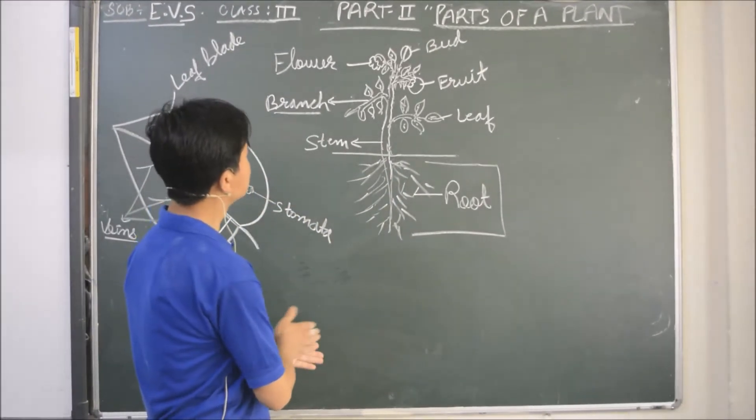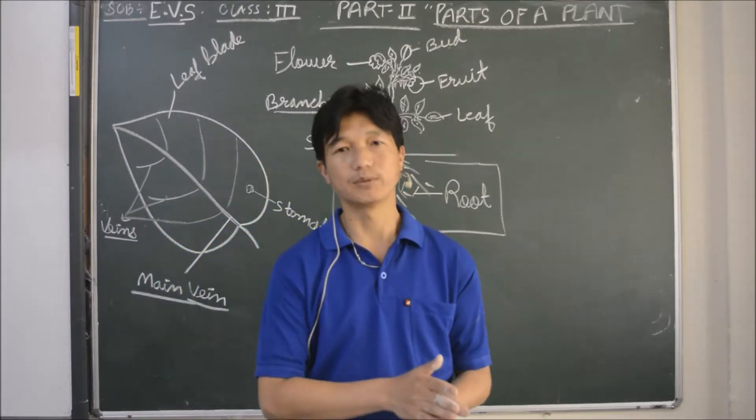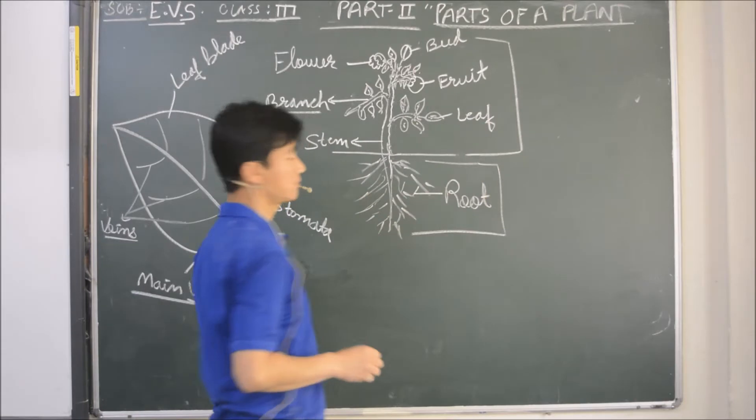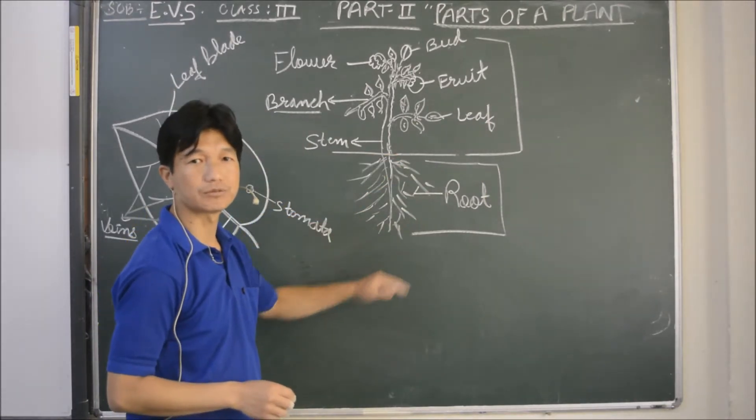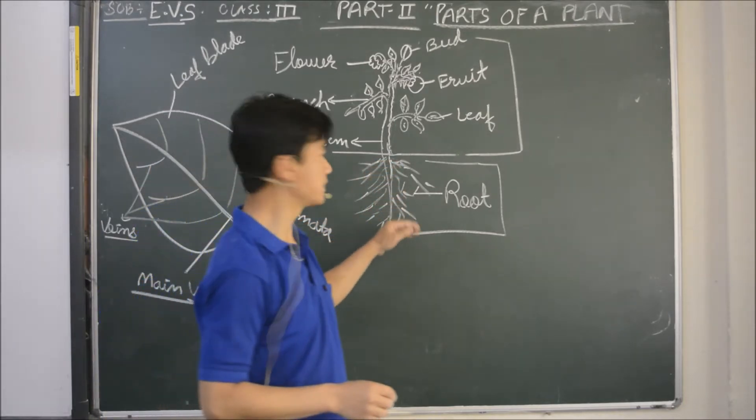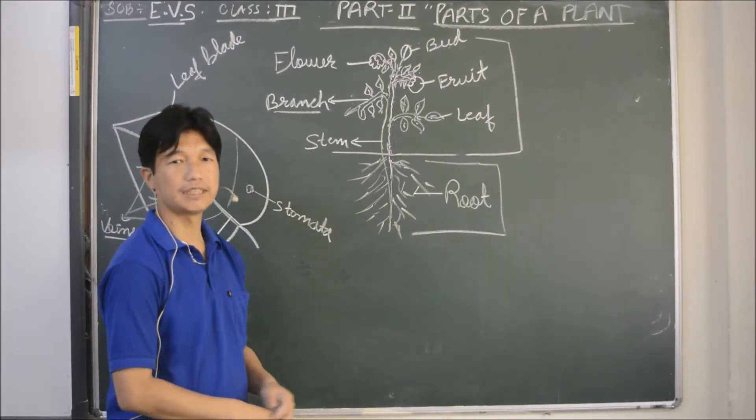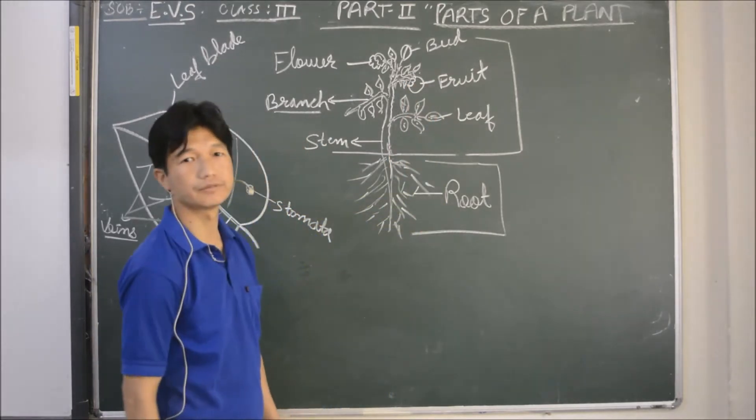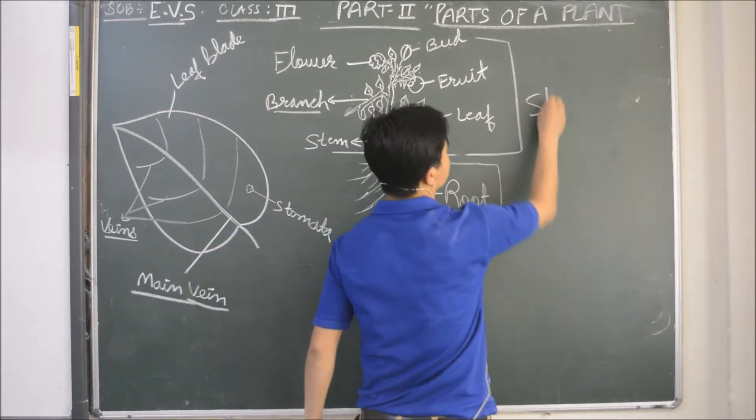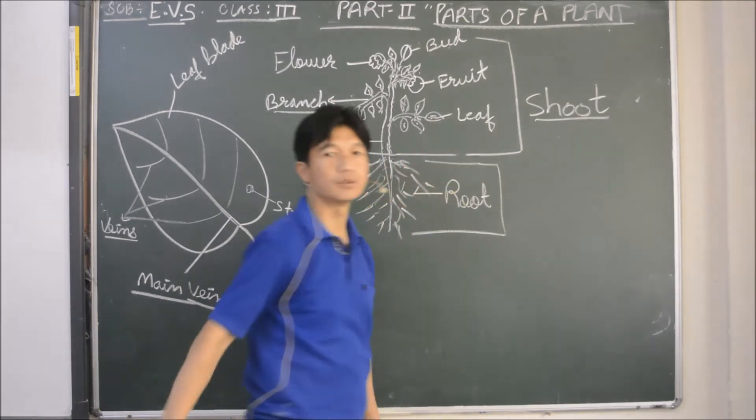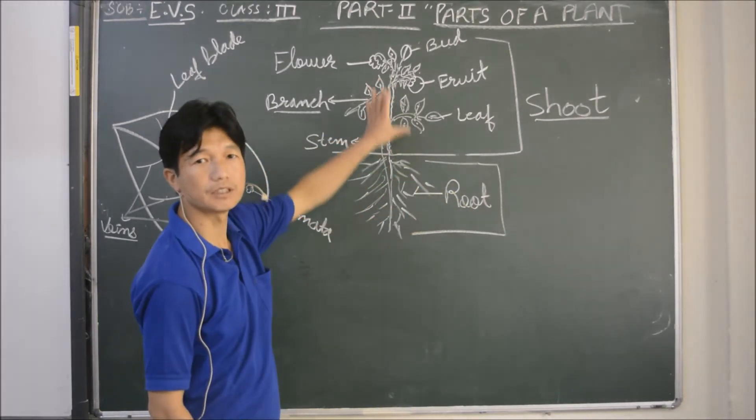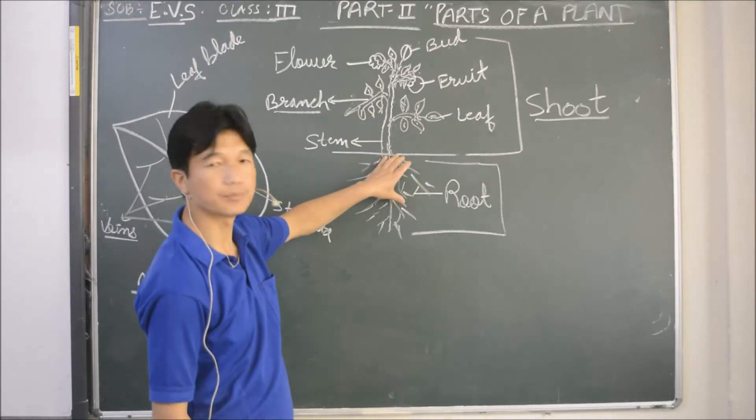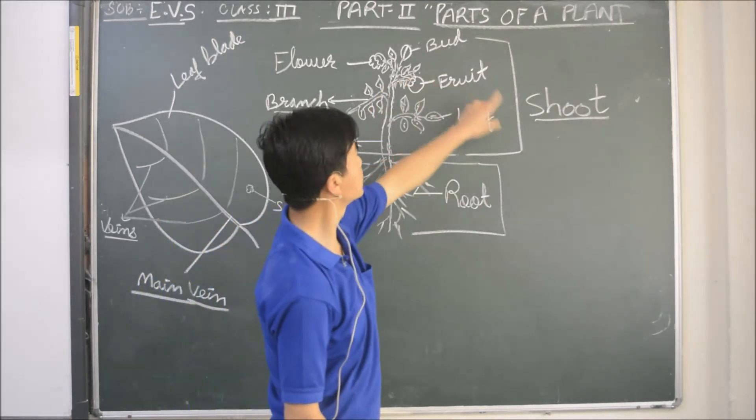So here are plants. Plants can be divided into two parts. They are root and shoot. The part below the ground, the part of a plant which is below the ground is called root. And another one is the part of a plant which is above the ground. The above the ground is called shoot. So that means plants can be divided into two parts, below ground is root and above the ground is called shoot.